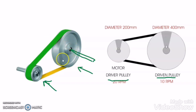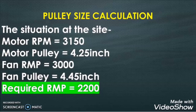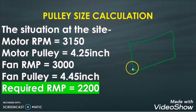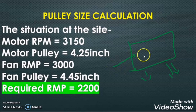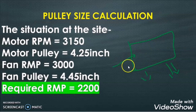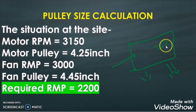Now let me explain what the problem was at site and how we solved it. We have one FAHU in our project. In that FAHU we were facing the problem of water leaking from the FAHU body. When we investigated the reason, we found that the motor RPM was very high and due to that the fan RPM was also very high, because the fan blades and the motor shaft are coupled with the pulley. So as the motor RPM was high, the fan blades RPM was also very high, and due to that the CFM — cubic feet per minute — airflow was very high.